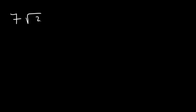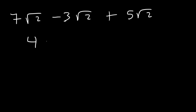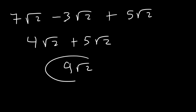Knowing that, simplify this problem: 7 root 2 minus 3 root 2 plus 5 root 2. All of these are like terms — they all contain the square root of 2. 7 minus 3 is 4, and 4 plus 5 is 9. So the answer is 9 root 2.